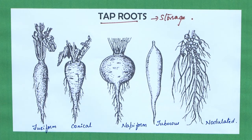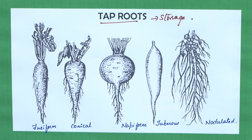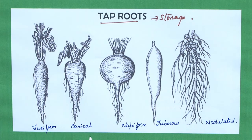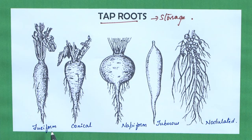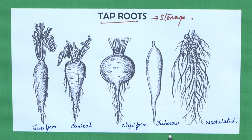For the purpose of storage, the tap root is modified into fusiform roots, conical roots, napiform roots, and tuberous roots. Fusiform roots are usually found in Raphanus sativus, conical roots are found in carrot, napiform roots are found in beetroot, and tuberous roots are found in Mirabilis jalapa.